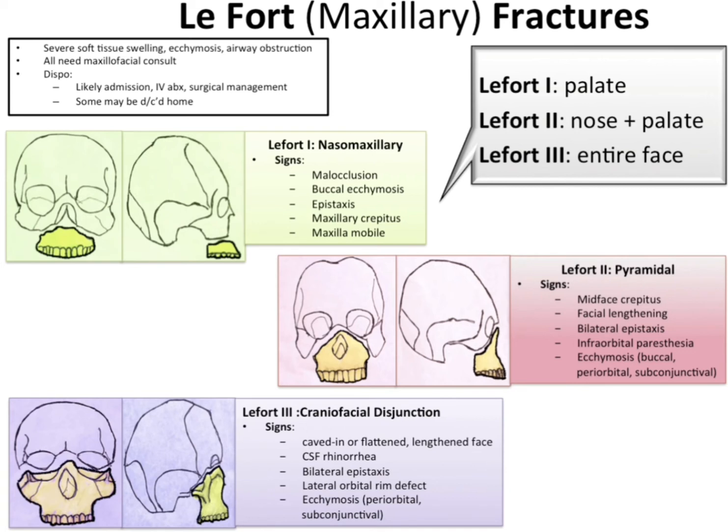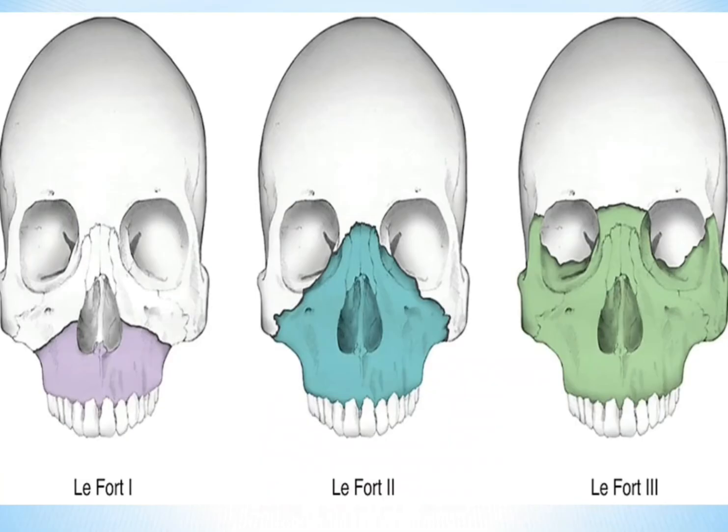Le Fort 3 is craniofacial dysjunction. The signs include a caved-in, flattened, lengthened face, CSF rhinorrhea, bilateral epistaxis, lateral orbital rim defect, and ecchymosis — periorbital or subconjunctival.